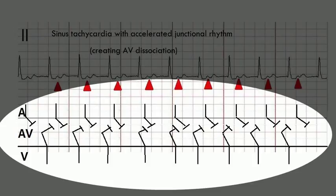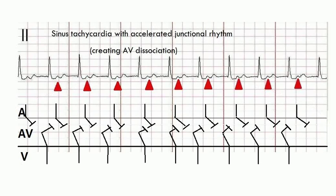If the atrial rate and ventricular rate are almost the same during AV dissociation, it is called isorhythmic AV dissociation.